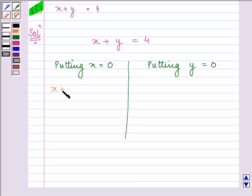The equation is x plus y is equal to 4. So on putting x is equal to 0, we have 0 plus y is equal to 4. That means y is equal to 4. This is the first point that we will get.